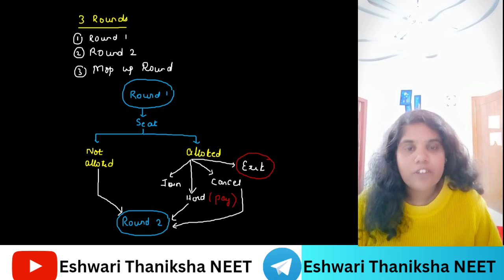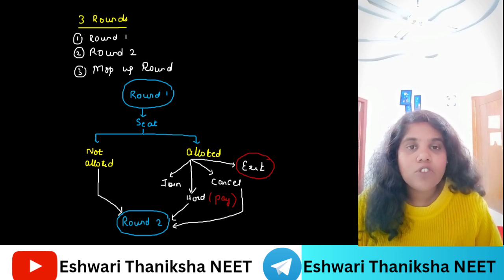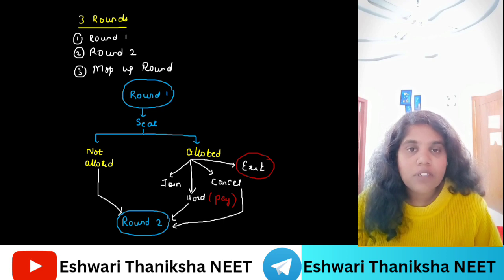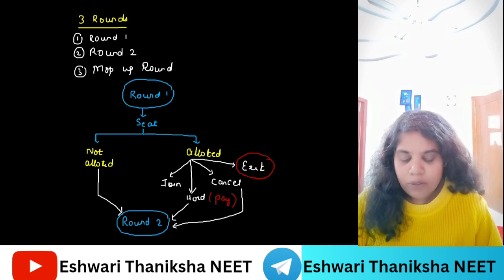If you select Choice 4, meaning is you are exiting from the counselling. Students, be careful here — exit does not mean exiting only from this round. Exiting means you are coming out of the counselling itself, so you are not going to participate in KEA NEET counselling at all. That is the meaning of Choice 4.